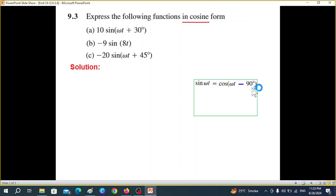This is a very important formula. If you remember this, it will solve all the problems. That is, sine ωt is equal to cosine ωt minus 90°. So from sine to cosine you have to subtract minus 90° to go to cosine.